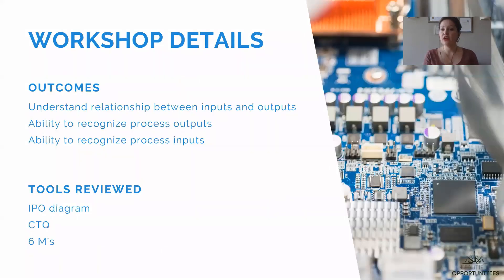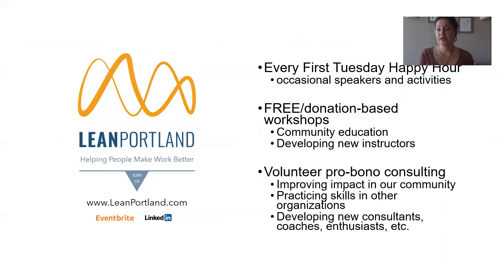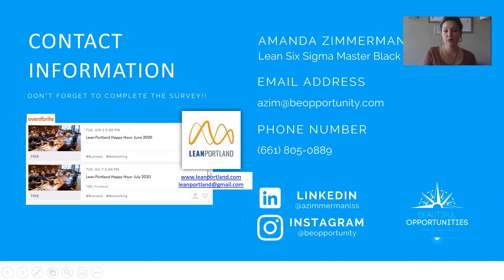Today the key takeaway is understanding the relationship between inputs and outputs, and being able to recognize process inputs and process outputs using tools like the IPO, CTQ, and Six M's. Join us for our happy hours — the next one is June 2nd, and then the first Tuesday of each month in July onward. Connect at azim@beopportunity.com and check out Lean Portland at leanportland.com.